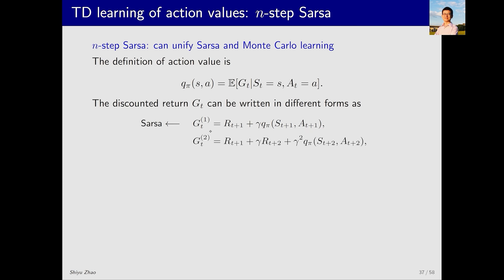Now comes the new idea. It can also be decomposed in a second way. This means considering the immediate reward at time T plus 1 plus gamma RT plus 2 and summarizing all subsequent rewards into a new Q pi ST plus 2 AT plus 2. Following this idea, we can decompose it into the nth form, which means it equals RT plus 1 plus gamma RT plus 2 and so on up to RT plus N. After that, all subsequent rewards are summarized into Q pi ST plus N AT plus N.